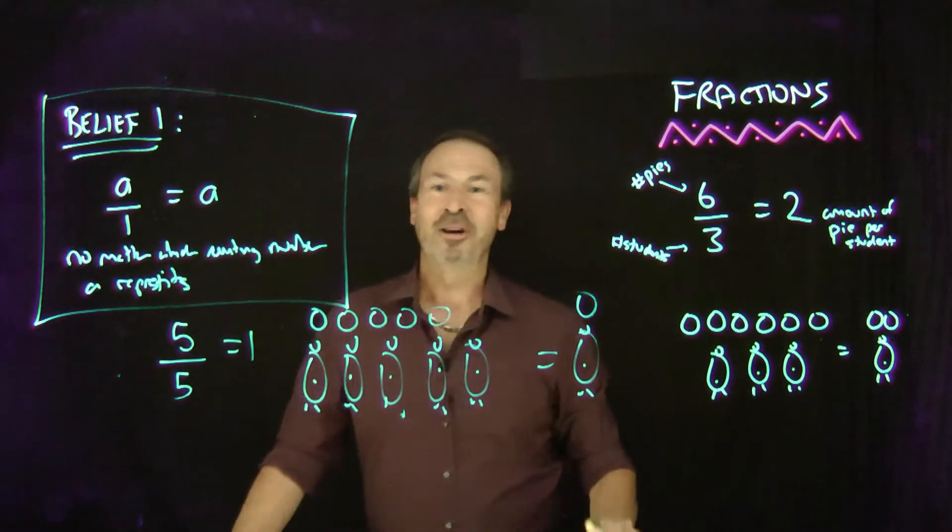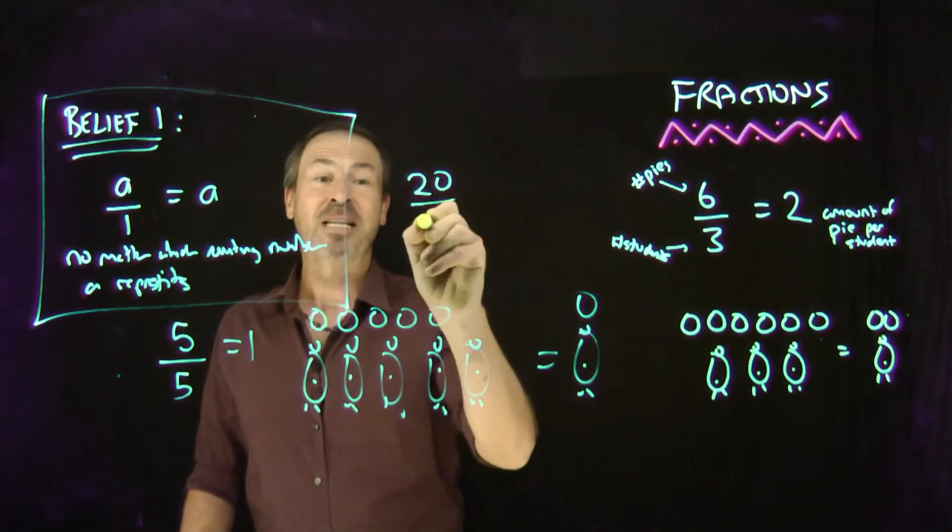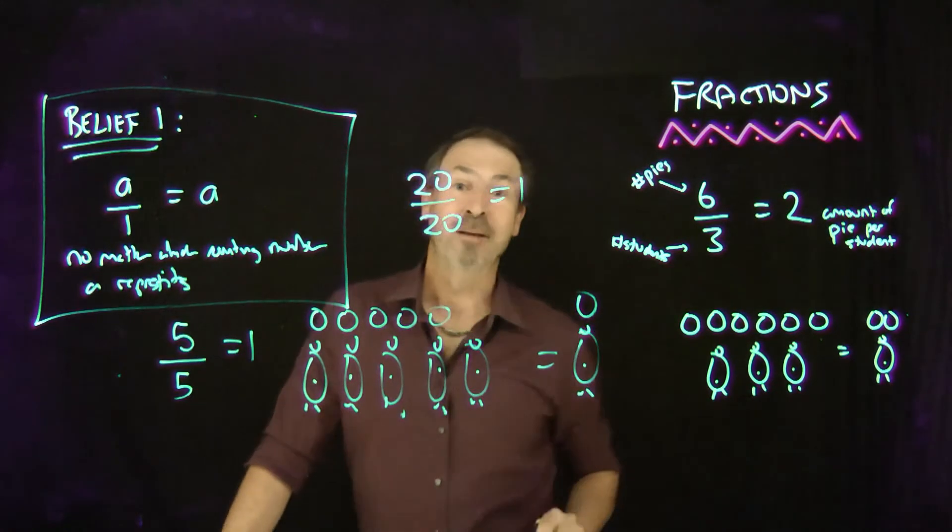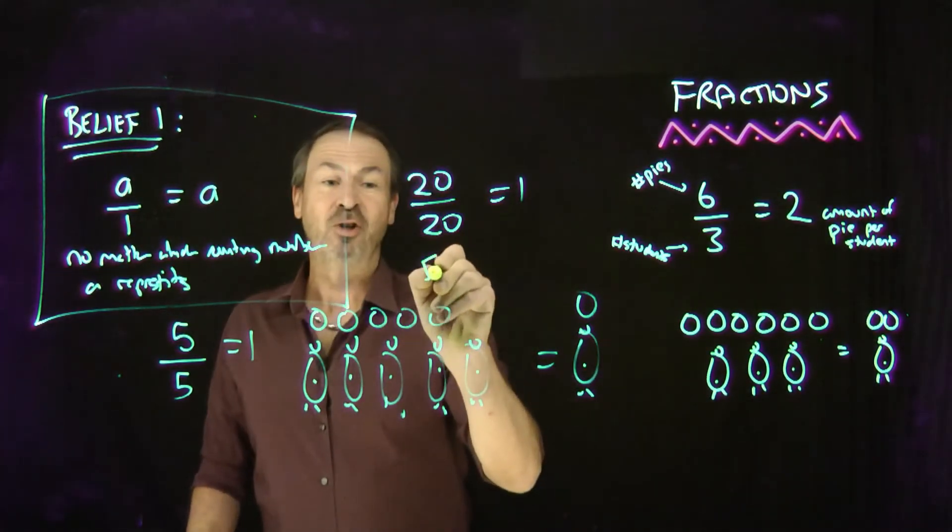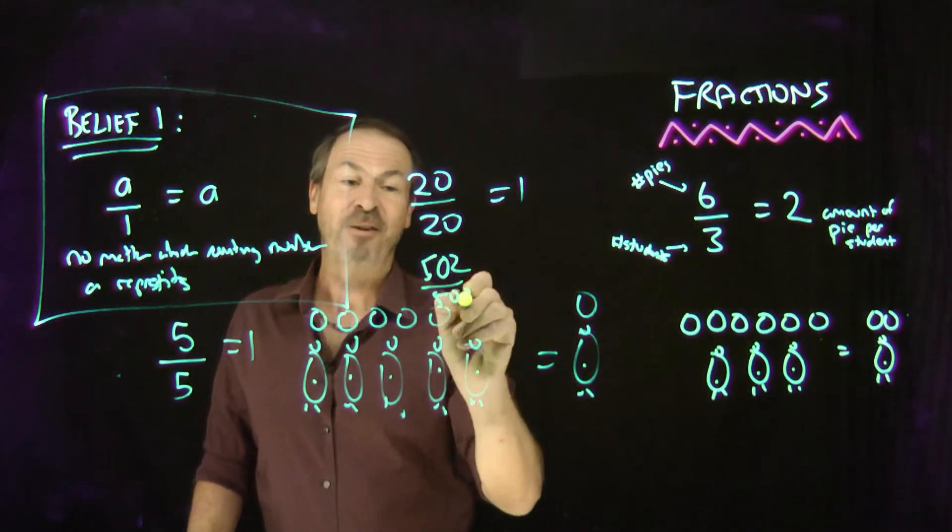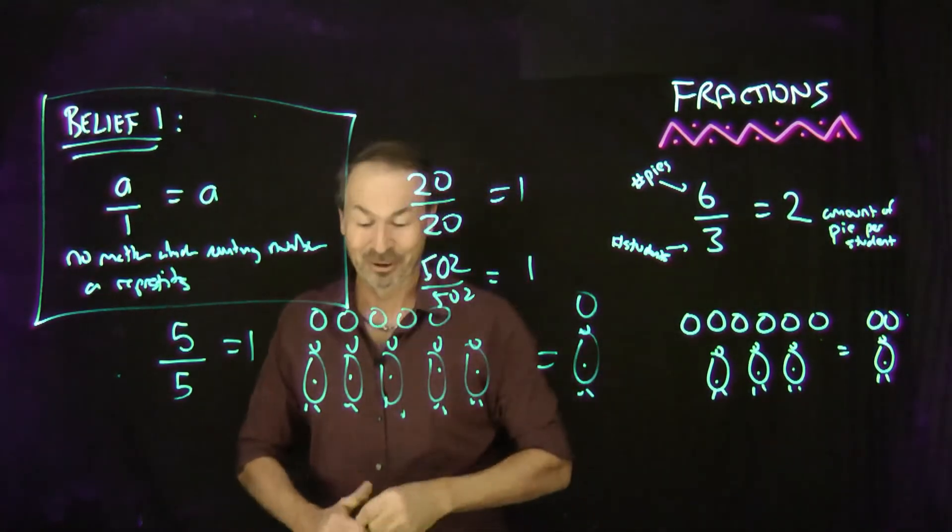But I don't need to draw up 20 pies to be shared equally amongst 20 students—that makes 1 pie per student. Or 502 pies to be shared equally amongst 502 students makes 1 pie per student.